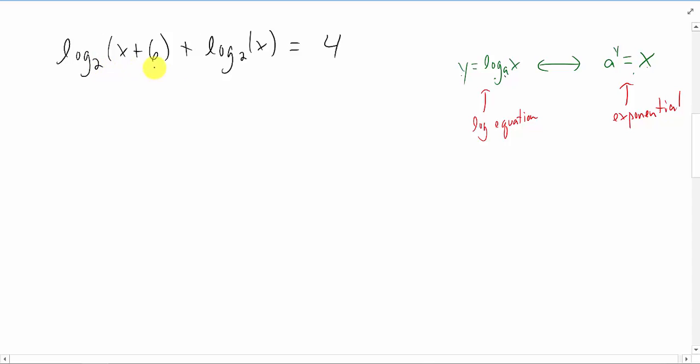Here again we are in the situation where we have two logarithms. They have the same base, so we can combine them. We combine two logarithms that are added together by multiplying what is inside of them. If you would like you can do this now or you can do this step later, but at some point in this problem you are going to distribute this x through these parentheses. And at some point in this problem we are going to switch from a logarithmic equation to an exponential equation.